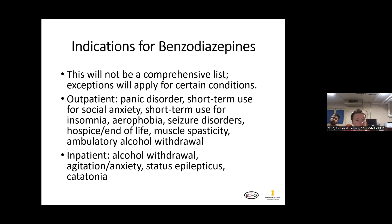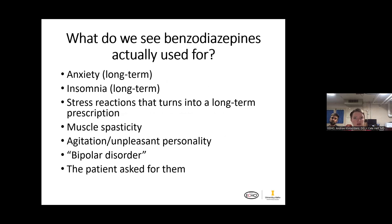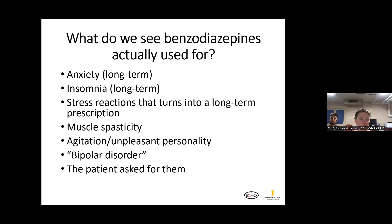What do we actually see benzos used for? We see some interesting uses of benzodiazepines both in the inpatient and outpatient setting — medications used for things they may not be technically approved or indicated for. We see them used for anxiety long-term, treatment of insomnia long-term, muscle spasticity, agitation, as a medication for bipolar disorder, or simply because the patient asked for them. We also do see benzodiazepines used appropriately for seizure disorder.